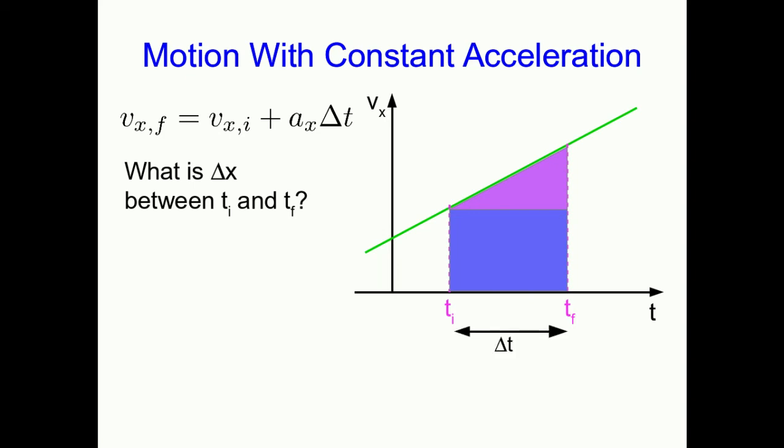So let's do that. First of all, let's note that this distance here, which isn't a distance it's a time, but anyway it's the base of the rectangle and of the triangle, and it's delta t. This total height here is vxf and this total height here is vxi, which means the little bit on the top, which is the height of the triangle, must be vxf minus vxi. But look at that, that's just delta v. And delta v we can rewrite as ax delta t.